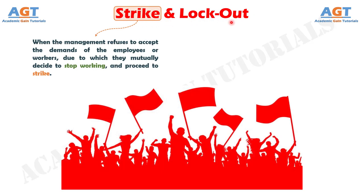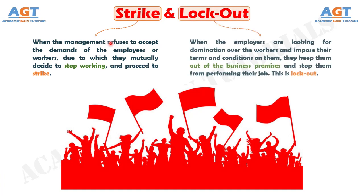When the management refuses to accept the demands of the employees or workers, due to which they mutually decide to stop working and proceed to strike. Workers use this as a last option when they don't find any other way to convince the management to agree to their demands. On the other hand, when the employers are looking for domination over the workers and impose their terms and conditions on them, they keep them out of the business premises and stop them from performing their job. This is what we call lockout.